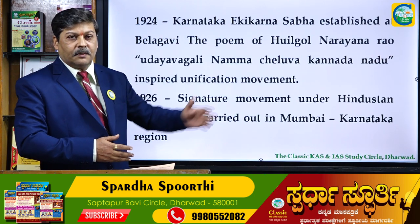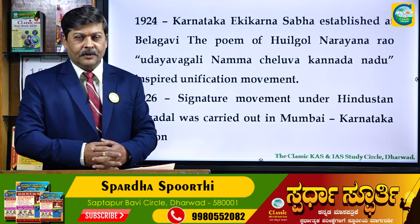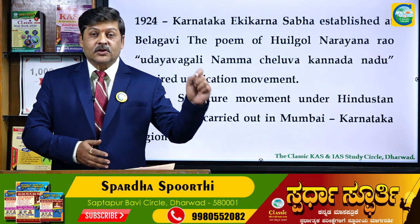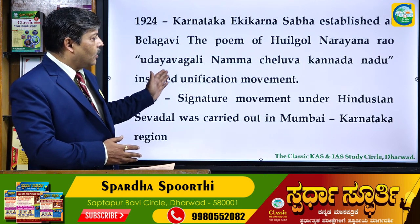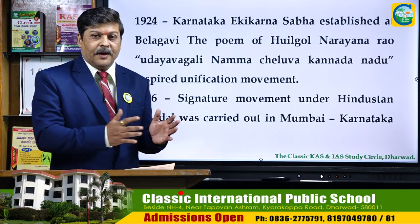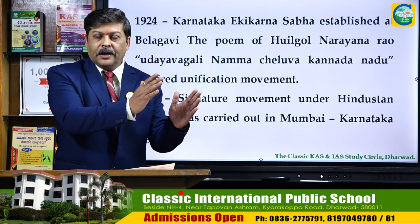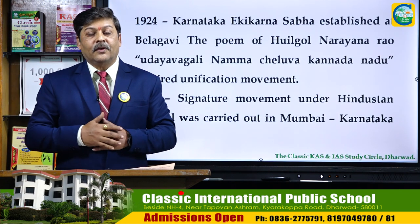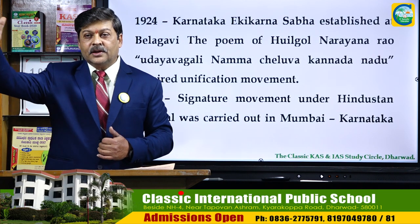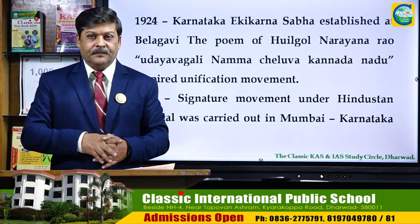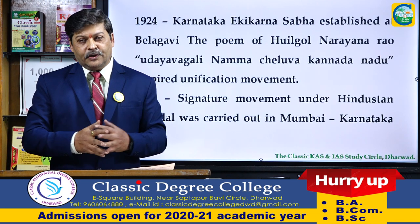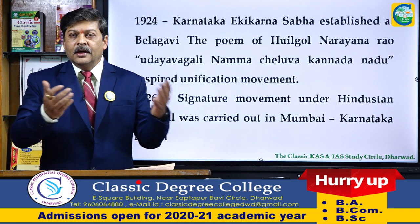In 1924, the Karnataka Ekikarana Sabha was established at Belgaum. The poem by Huilugol Narayan Rao, 'Udai Vagali Namma Chalava Kannadanaadu,' inspired the unification movement and is considered the song of the unification. Karnataka Ekikarana Sabha adopted the same methodology as the Indian National Congress, organizing annual sessions in different parts of the Kannada territories to kindle the fire of unification and inspire the people.